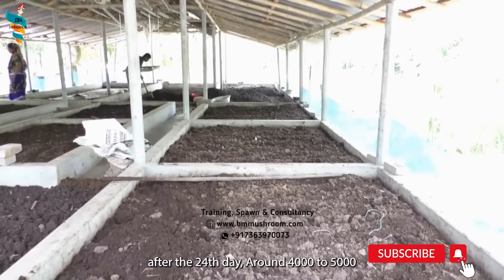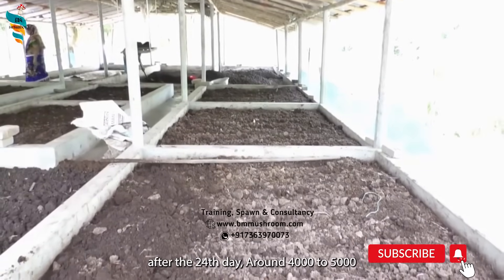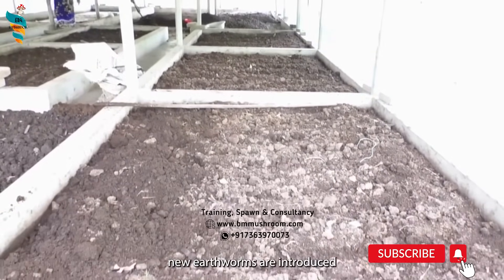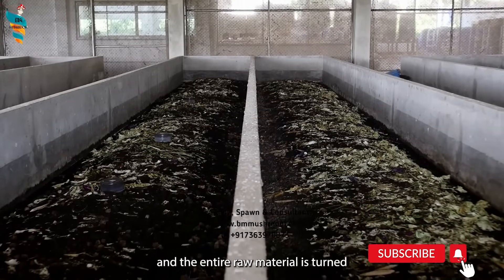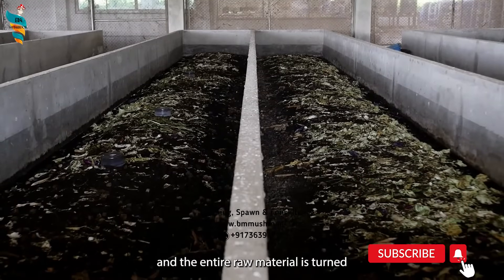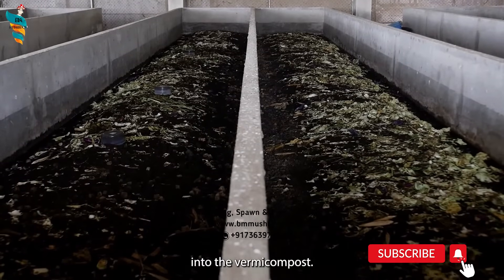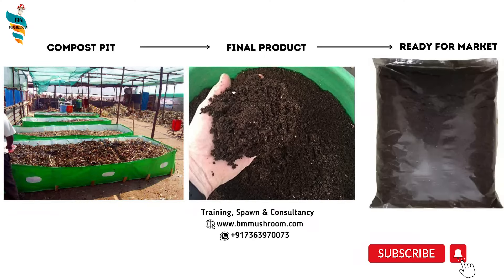After the 24th day, around 4,000 to 5,000 new worms are introduced and the entire raw material is turned into vermicompost. This vermicompost can be used as manure during farming or gardening, or can be further packed and sold in the market. It has a great demand in the market.